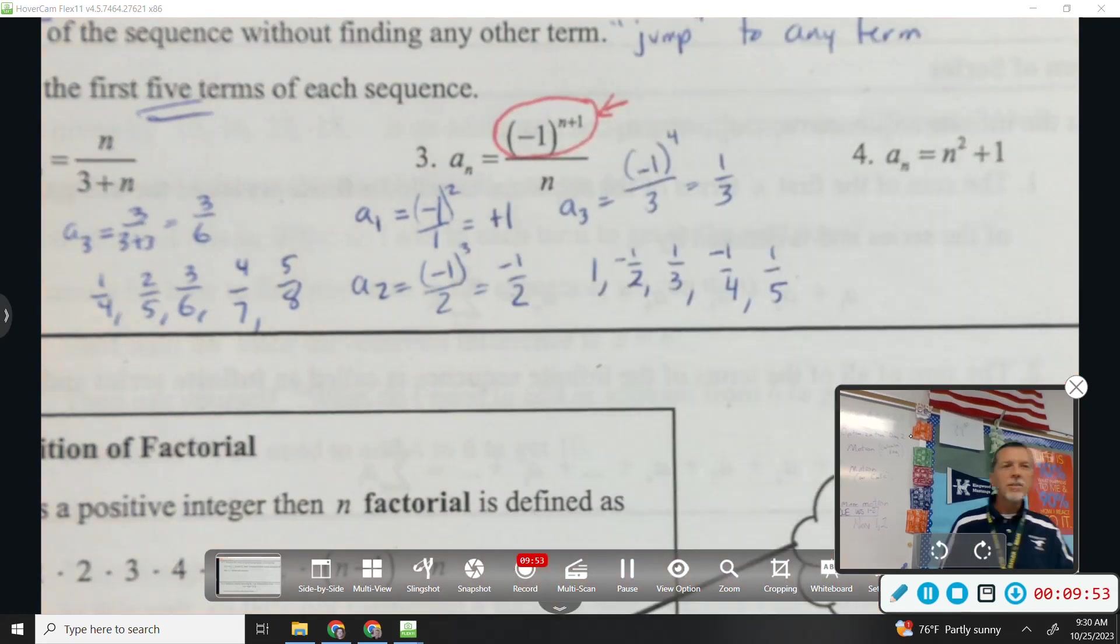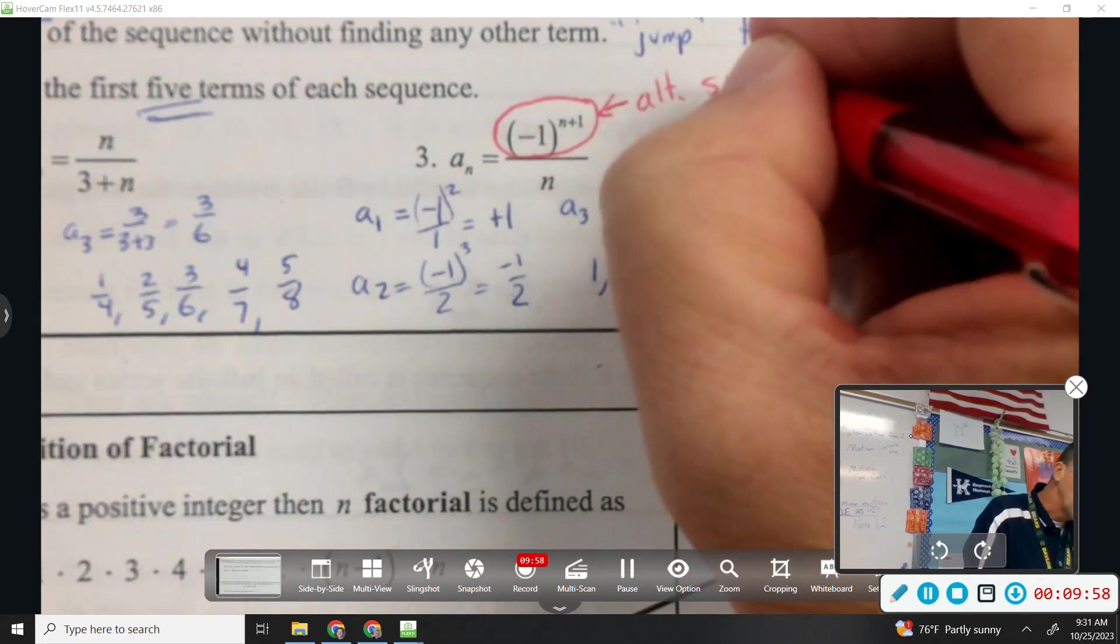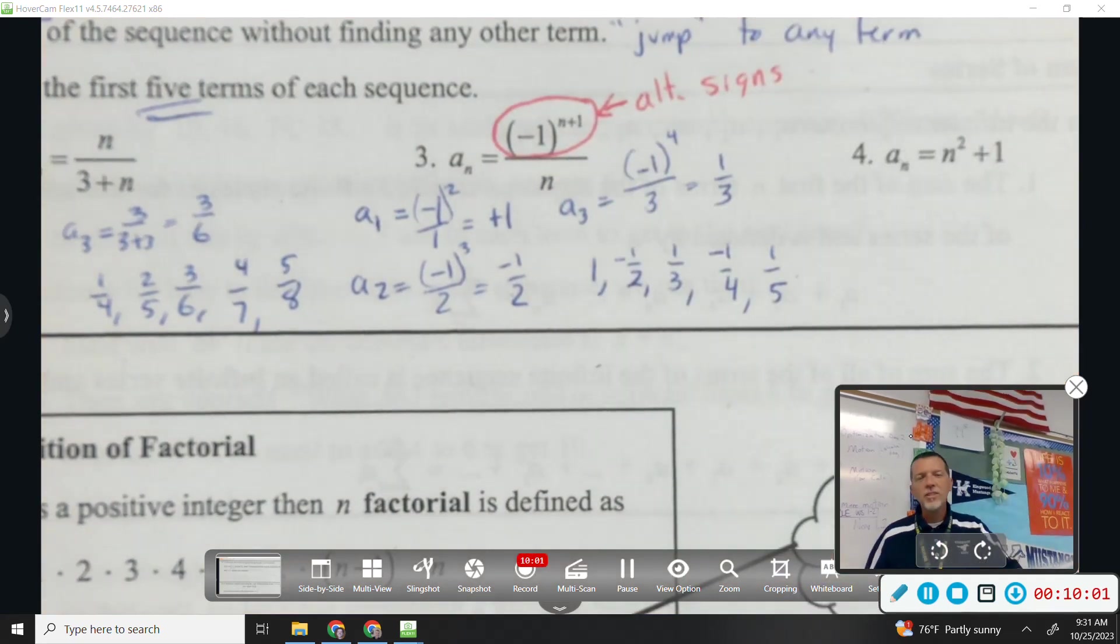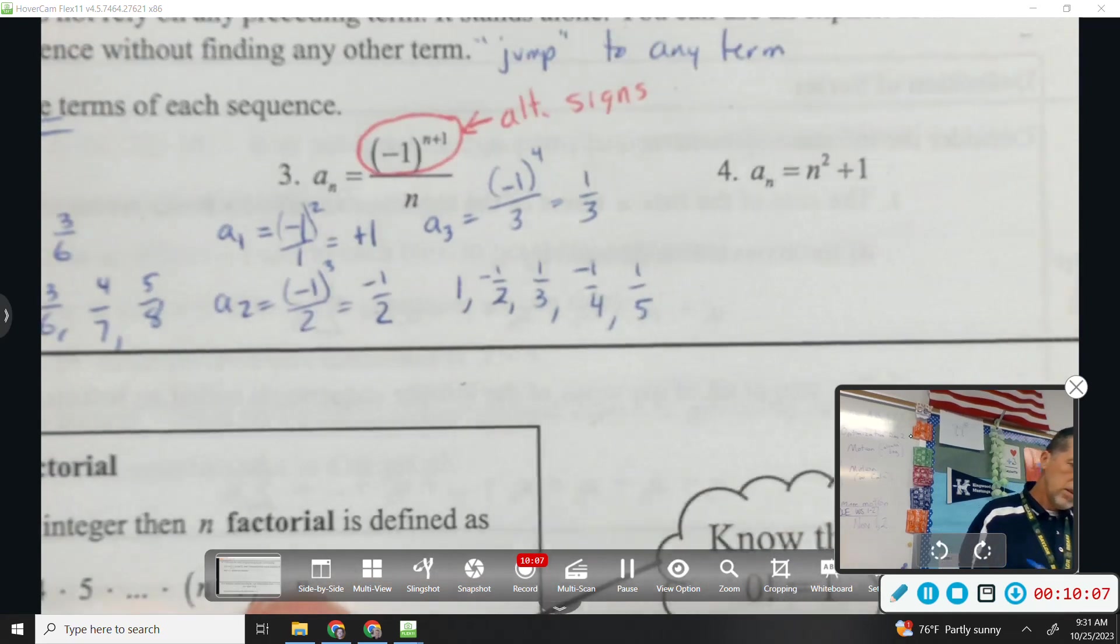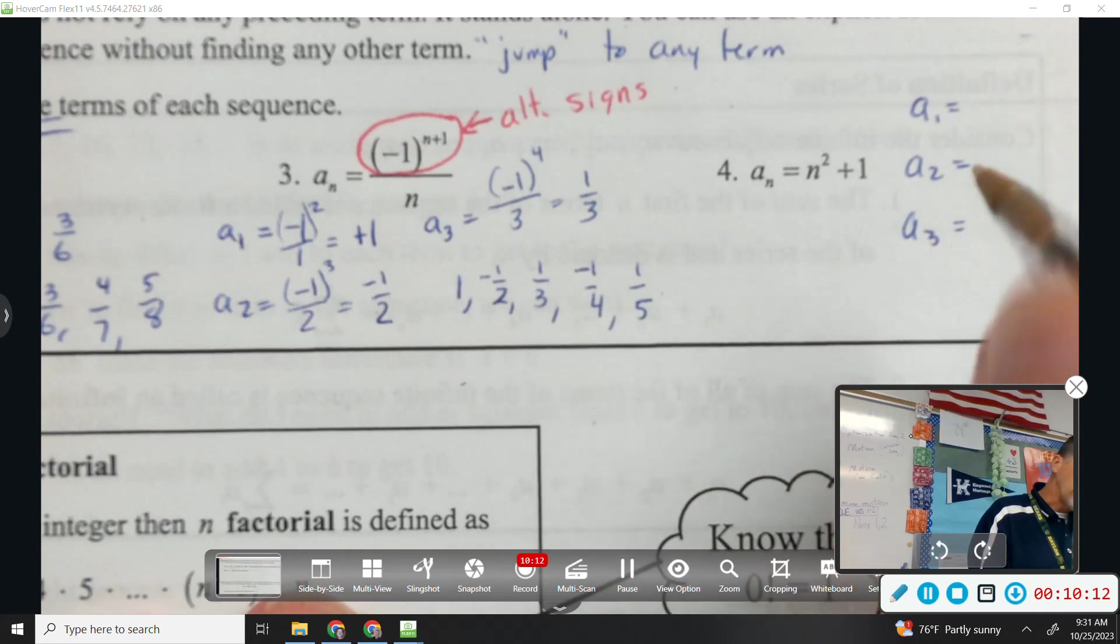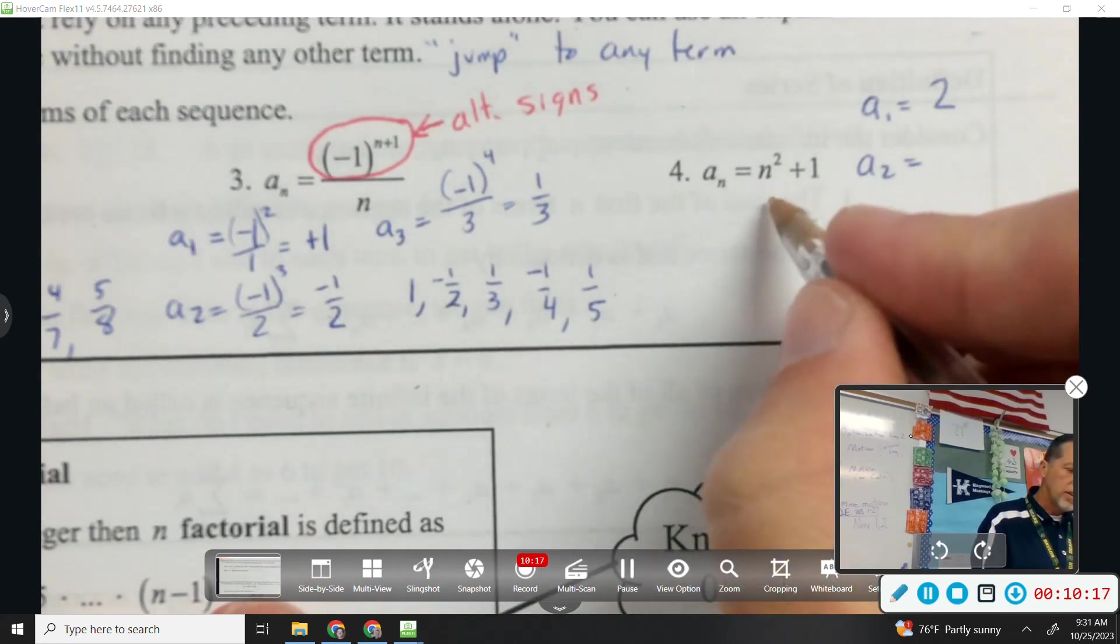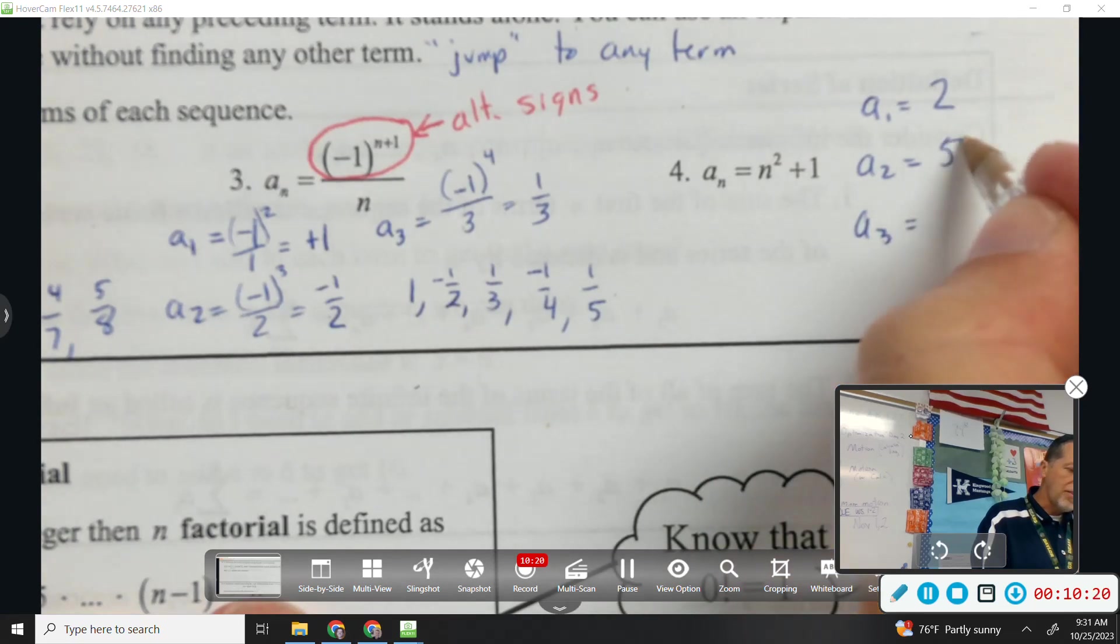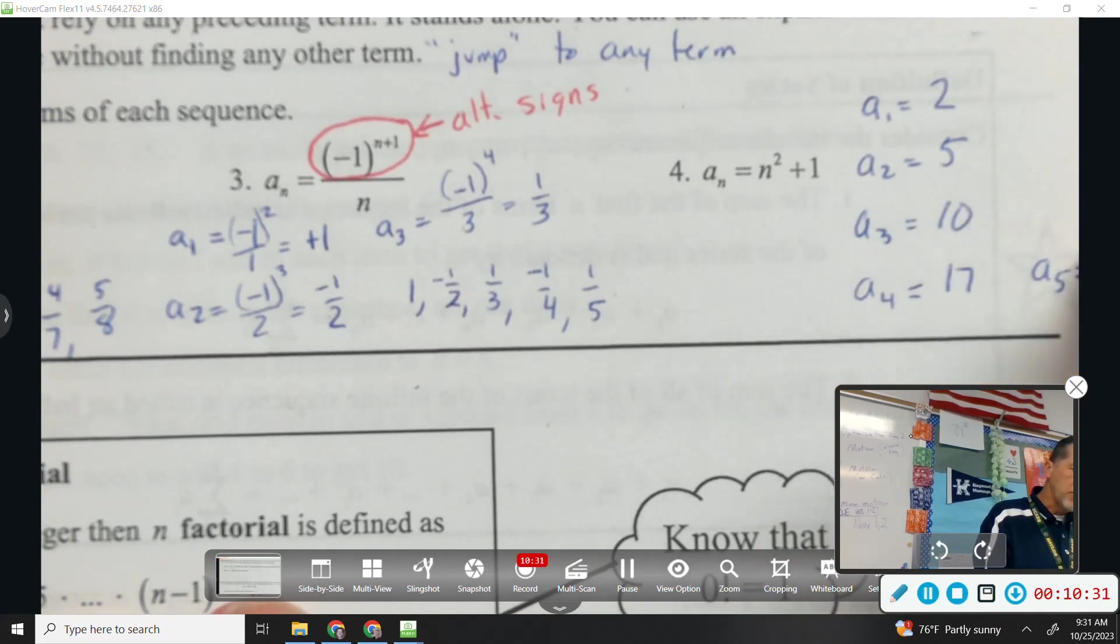We see this a lot in sequences and series. If you've got a negative 1 raised to an n or an n plus 1, all that does is alternate the signs. Because it changes from positive to negative to positive to negative to positive to negative. May not need to show a whole lot of work on this one. 1 squared plus 1 would be 2. 2 squared plus 1 would be 5. 3 squared plus 1 would be 10. 4 squared plus 1 is 17. And 5 squared plus 1 would be 26.